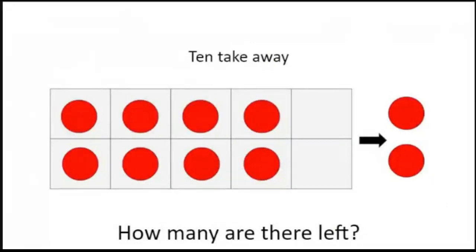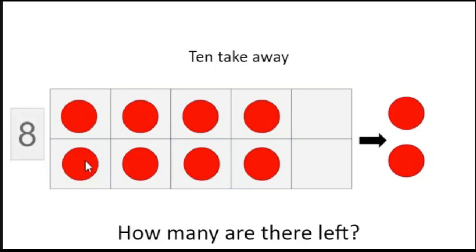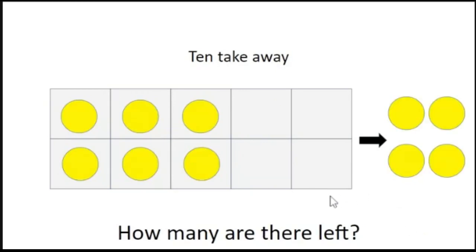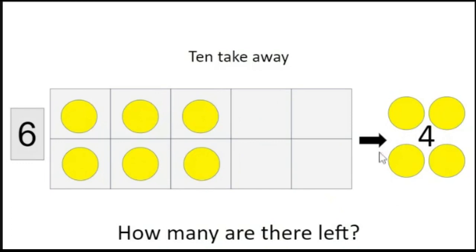Now we are going to take away. How many are there left when you take away two? Let's count. Remember, this is a ten frame. There are ten boxes. When you take away two, you have one, two, three, four, five, six, seven, eight. You have eight. Let's move on. We are taking away four this time. How many do we have left? One, two, three, four, five, six. We have six. When you take away four, you have six.